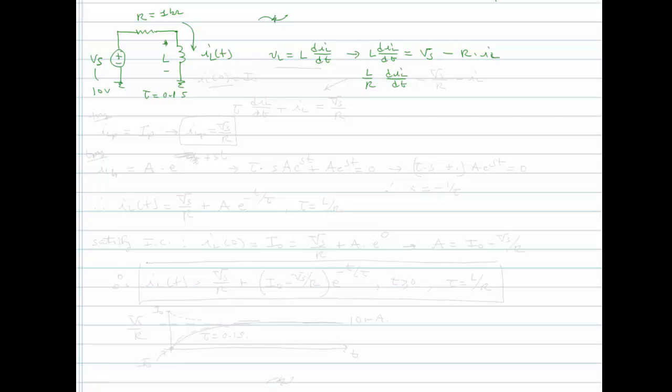So now if I divide by R on both sides, I'm going to get L over R dIL dT equal to VS over R minus IL. And lastly, I can write this as tau dIL dT plus IL is equal to VS over R.